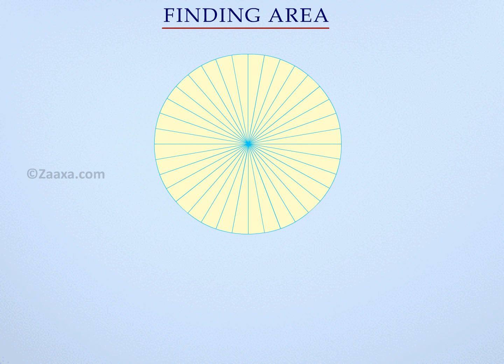Now, let us see how we can calculate the area of a circle. Let us imagine that we divide a circle into 36 equal parts. Notice that each portion of the circle almost resembles an isosceles triangle, the height of which is equal to the radius of the circle.